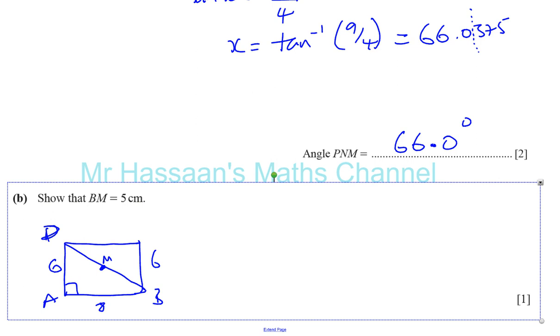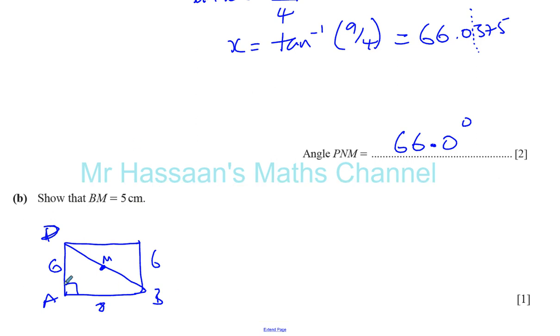We need to find, we can find what BD is. Okay, BD is part of this right angle triangle. So I can say BD is, by Pythagoras, it's the hypotenuse, so it's the square root of six squared plus eight squared. The sum of the square, the two shorter sides.